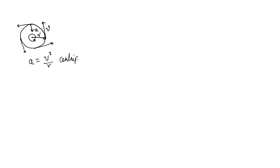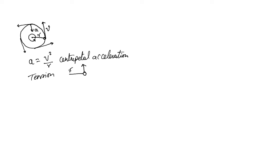This centripetal acceleration must be provided by a force. That force is actually the tension in the string. So if you draw a free body diagram, the object is moving along the circle, the tension acts toward the center, and because of this there's an acceleration of v squared over r.